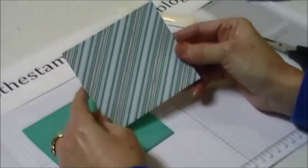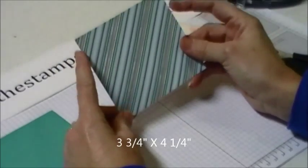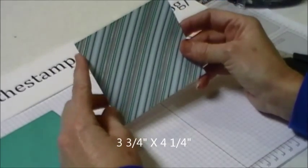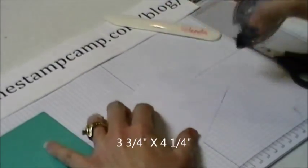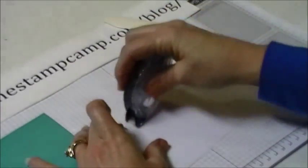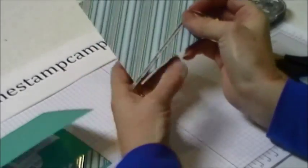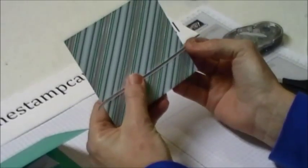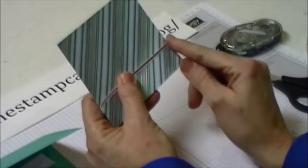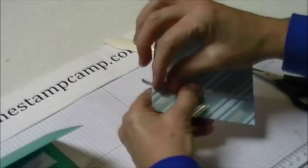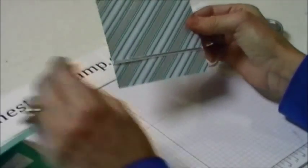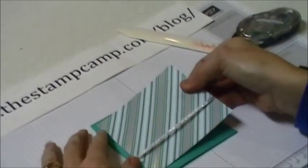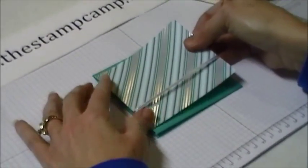I cut a piece of the coordinating designer series paper and this is 4¼ by 3¾. I'm just going to run some adhesive on the back. I'm going to take my silver ribbon and probably about an inch up from the bottom, I'm going to attach my ends of my ribbon to the back and then attach it to the front. I have a little bit of the, I think it's Bermuda Bay, showing at the top and the bottom.